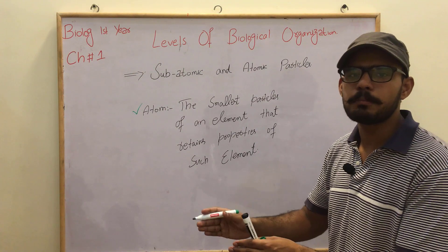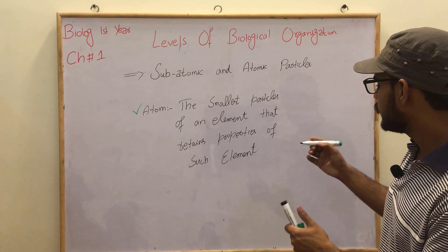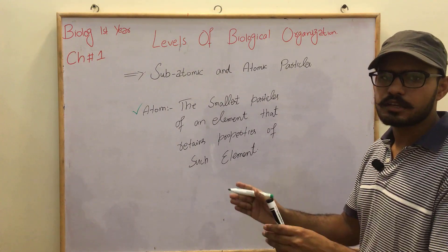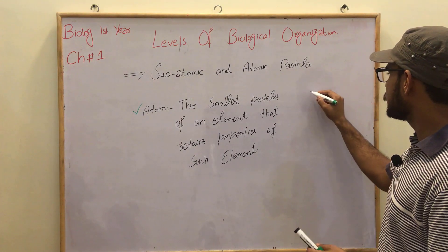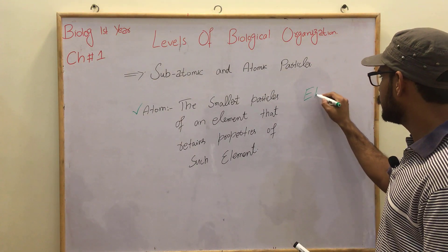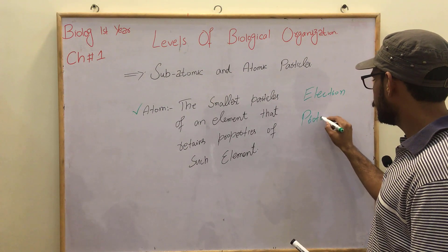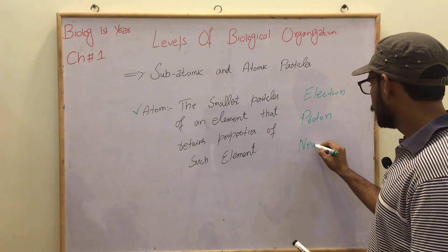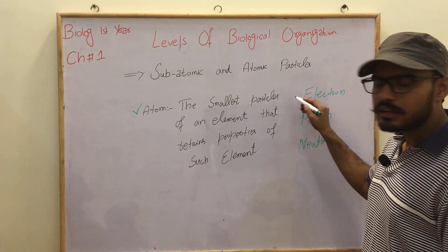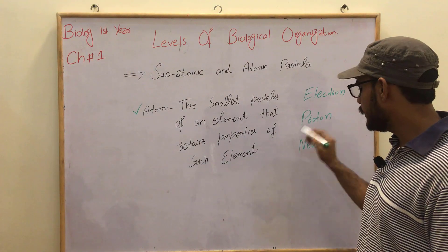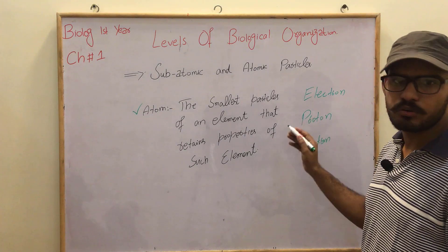We get to know the basic sub-atomic particles found in an atom. First of all, the electron, proton, and neutron. As we all know, the electron has a negative charge, the proton has a positive charge, and the neutron has a neutral charge — neutron has no charge, that's why we named it neutron.